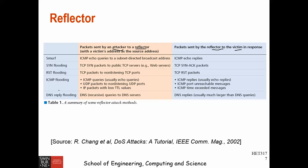The fourth type is ICMP flooding, which has different subcategories: it can use ICMP echo queries, or UDP packets to non-listening UDP ports, or IP packets with a low TTL — a low number of hops. The reflector sends back a time-exceeded message, telling the victim that the packet did not reach its destination because the hop count reached zero.